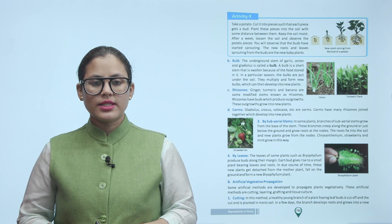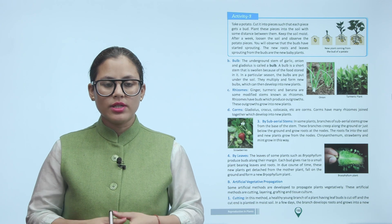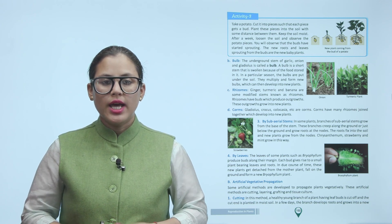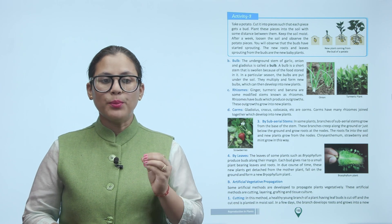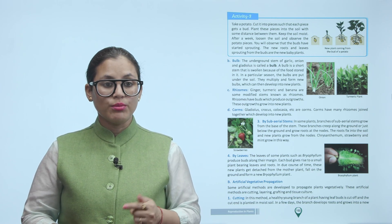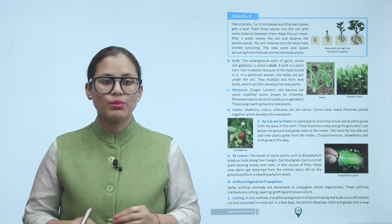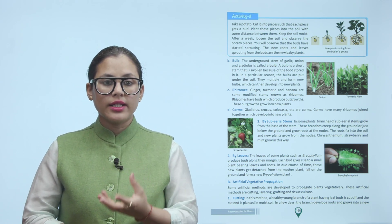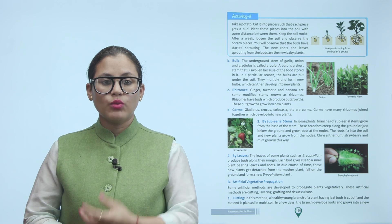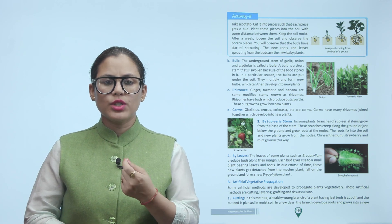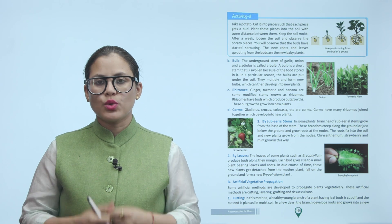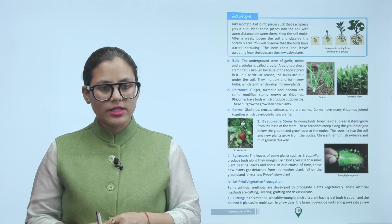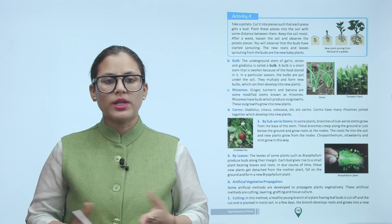Bulb — the underground stem of garlic, onion, and gladiolus is called a bulb. A bulb is a short stem that is solid because of the food stored in it. In a particular season, the bulbs are put under the soil; they multiply and form new bulbs, which can then develop into new plants.